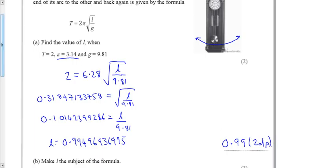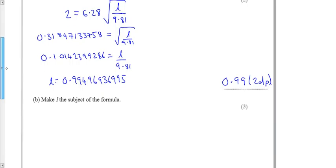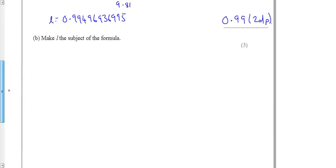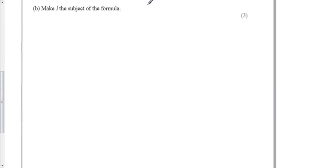Well, the second bit asks us to do basically the same question, except to now make L the subject of the formula, so we've got to do it using algebra. So we've got T equals 2pi square root of L over g. At the moment T is the subject, we want to make L the subject. So let's just do the same thing, but using algebra.